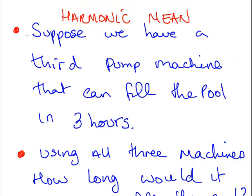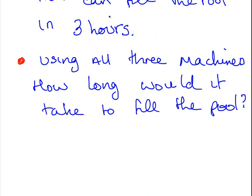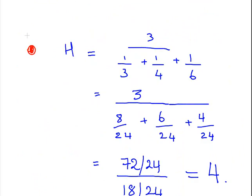Suppose we have a third pump machine that can fill the swimming pool in 3 hours. Now using all three machines, how long would it take to fill up the swimming pool? So this time we have 3 machines. 1 takes 3 hours, 1 takes 4 hours, 1 takes 6 hours. The harmonic mean of that.